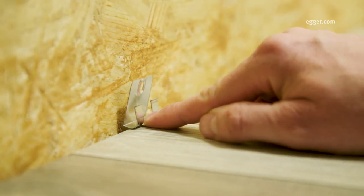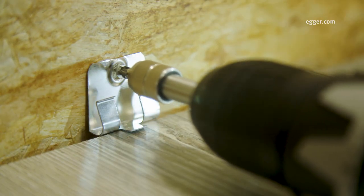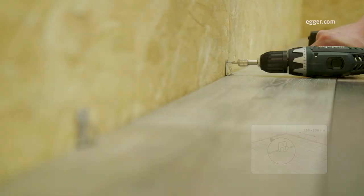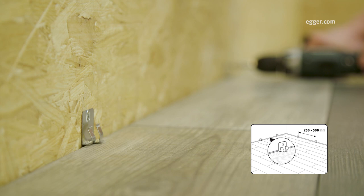As a first step, the fastening clips are screwed into the wall at a distance of 25 to 50 cm, depending on the wall material. They're used to click the skirting boards onto the wall without a separate fastening.